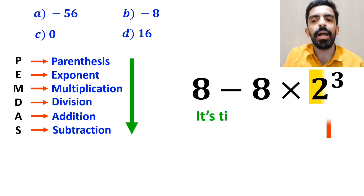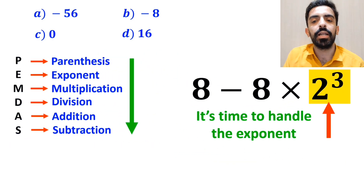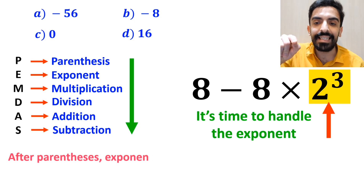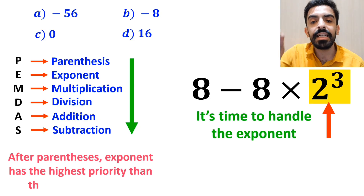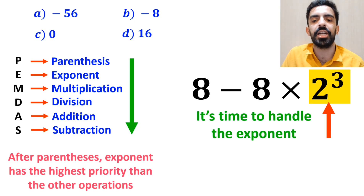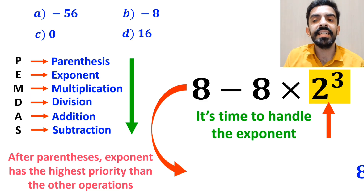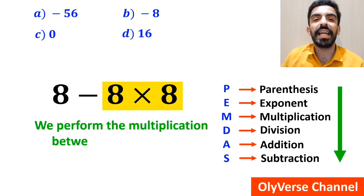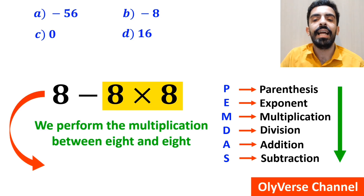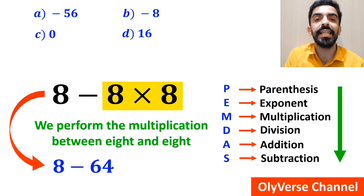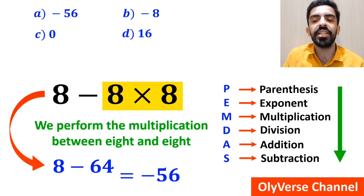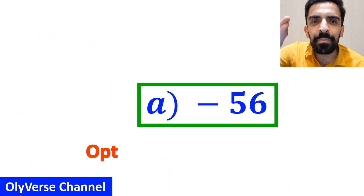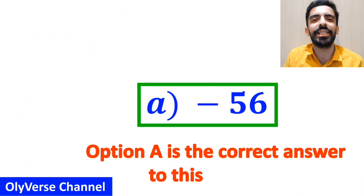In the following step it's time to handle the exponent, because according to the PEMDAS rule, after parentheses, exponents have the highest priority. So this expression becomes 8 minus 8 multiplied by 8. In the final step we perform the multiplication between 8 and 8 and simplify to 8 minus 64, which finally gives us the answer negative 56. Option A is the correct answer to this question.